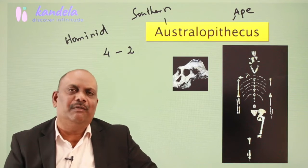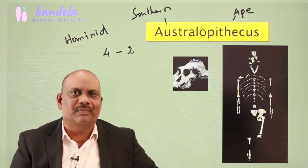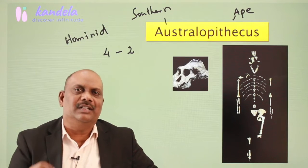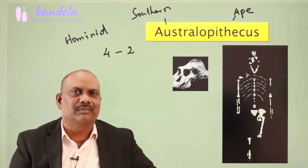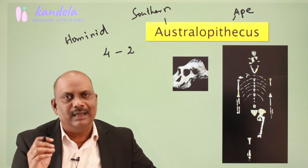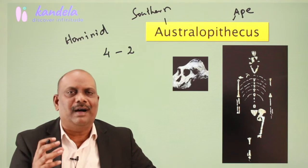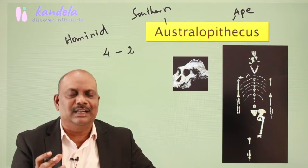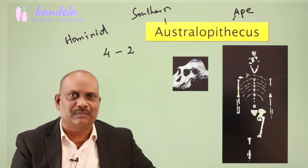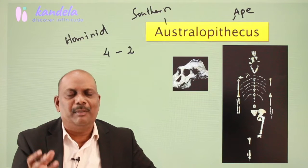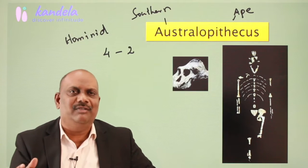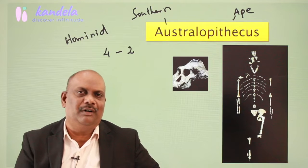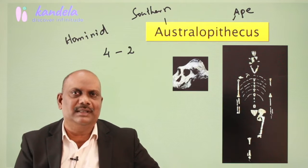How do we assume that an ape which lived a few million years ago is our ancestor? This is based on a number of anatomical similarities, a number of anatomical features. We will discuss the phylogenetic position of Australopithecus later.